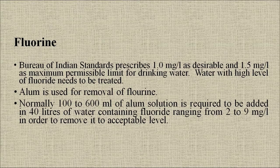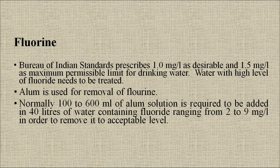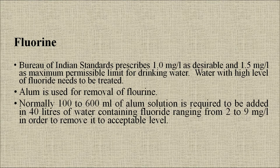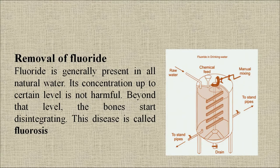The Bureau of Indian Standards prescribes 1 mg/L as desirable and 1.5 mg/L of fluorine as the maximum permissible limit for drinking water. Water with high levels of fluorine needs to be treated. Alum is used for its removal; normally 100 to 600 ml of alum solution is required in 40 liters of water containing fluoride ranging from 2 to 9 mg/L to remove it to an acceptable level. Beyond safe concentration levels, bones start disintegrating and the disease is called fluorosis.